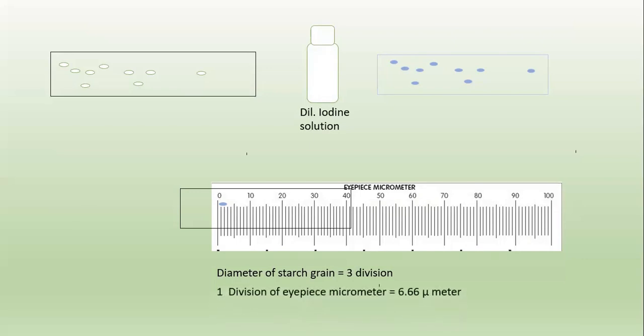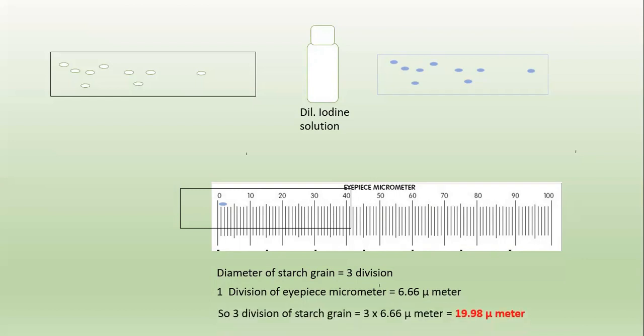So the diameter of the starch grain is equal to three divisions of the eyepiece micrometer. We know that one division of the eyepiece micrometer is equal to 6.66 micrometers. So three divisions is equal to 3 multiplied by 6.66 micrometers. The total diameter of the starch grain is 19.98 micrometers.